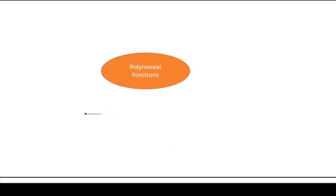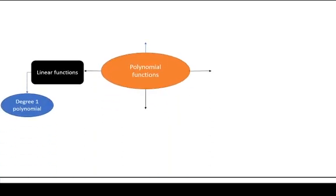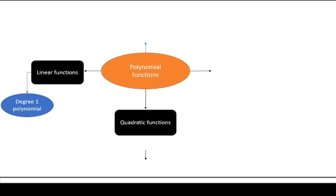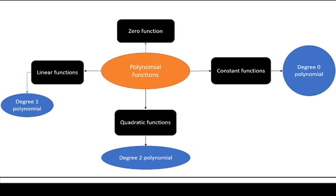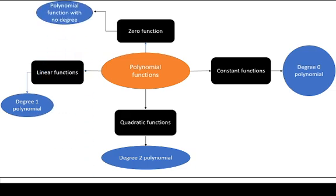Now we can describe how lower-degree functions are polynomial functions. Linear functions are polynomial functions of degree one, quadratic functions are polynomial functions of degree two, constant functions are polynomial functions of degree zero, and zero functions are polynomial functions not assigned a degree at this level.